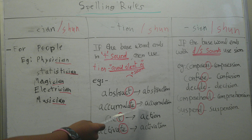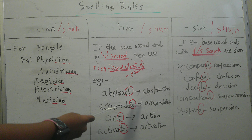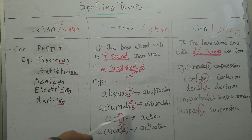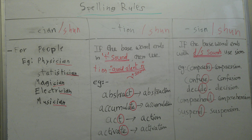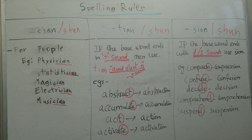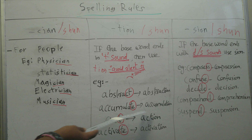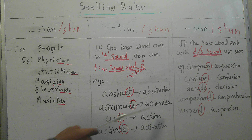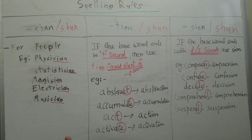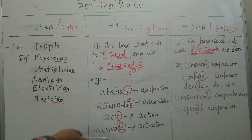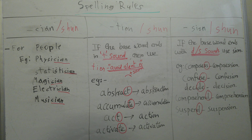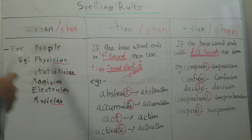For example, 'abstract' ends with a 't' and becomes 'abstraction' with T-I-O-N. 'Accumulate' has an 'e' at the end, but we use the consonant 't', so it becomes 'accumulation'. 'Act' has a 't' and becomes 'action'. 'Activate' also has an 'e' at the end that we remove, then add I-O-N, giving us 'activation'.